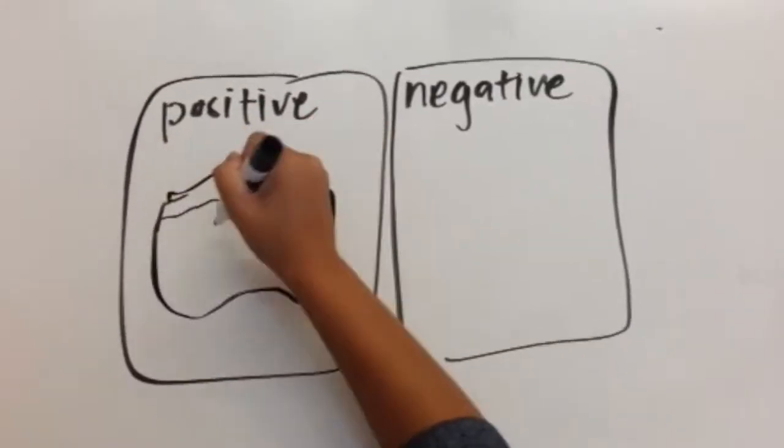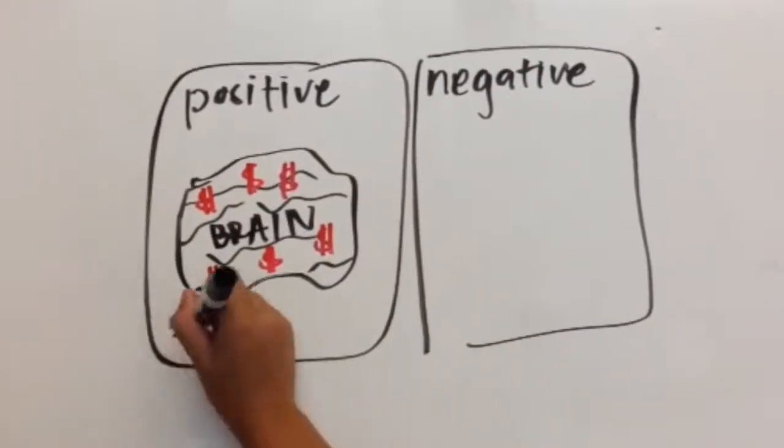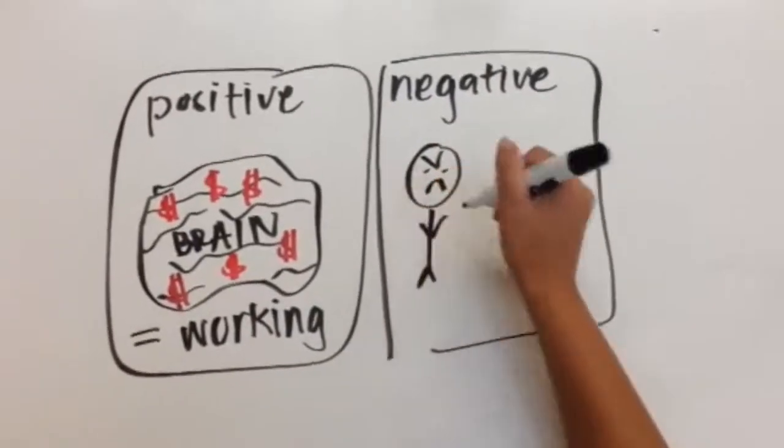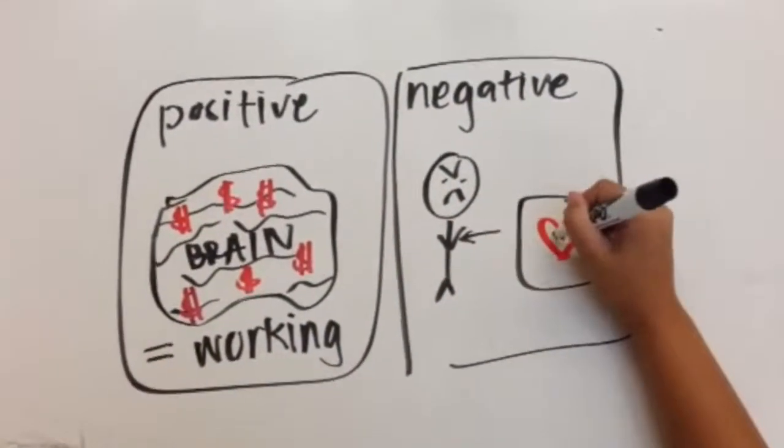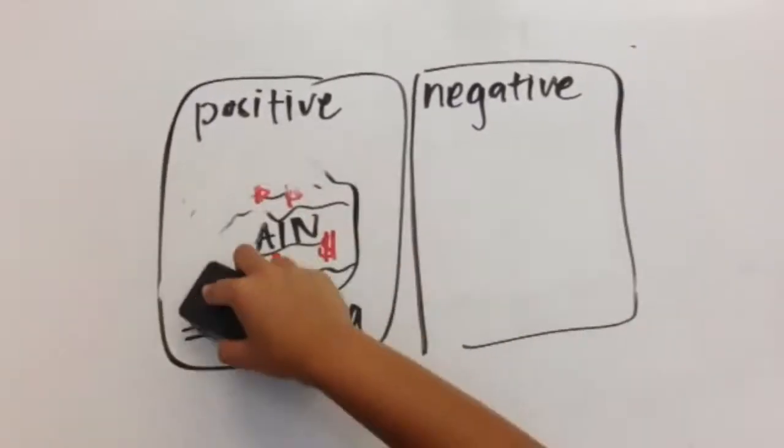A positive incentive could be that kids say that money functions their brain more because they know they are getting something in return. The negative incentive is if you teach kids that they receive money because of good grades, as they grow up they are going to think that they should only do things if they get rewarded.